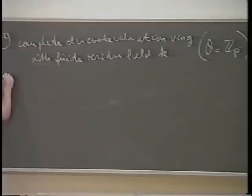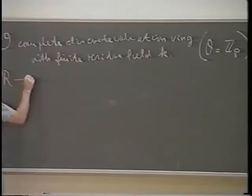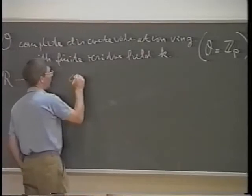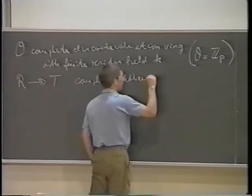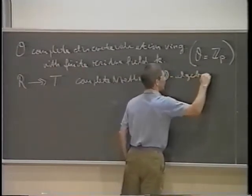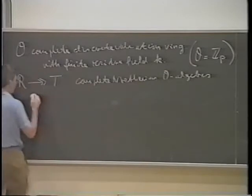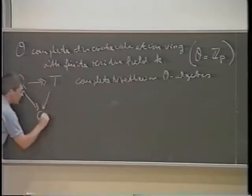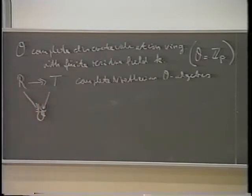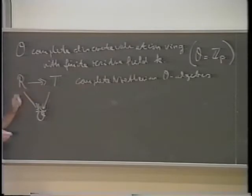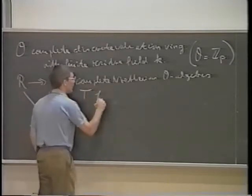I assume that I have a surjective map of two complete Noetherian O-algebras. I want them both to be pointed in the sense of yesterday, so there is a commutative diagram of this sort, and all these maps are also surjective. On T, we put one further condition: T is supposed to be finite and free.